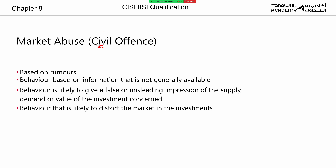With a civil offense, there's no jail — the fine will hurt but there's no jail time. Market abuse, sometimes called market manipulation in this qualification, is when you want to influence or distort the market. For example, you've bought shares of a company and the share price is not going up, so you spread a rumor in the market that the company has won a government contract.